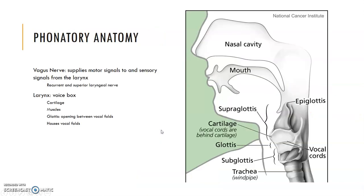There are two things you need to know for phonation anatomy. The vagus nerve supplies the efferent and afferent signals to the larynx. There are multiple branches because it is the wandering nerve, but the recurrent laryngeal nerve and superior laryngeal nerve provide innervation to the larynx for the motor signals that tell the muscles to close for phonation. The recurrent nerve provides most signals; the superior nerve really provides just one muscle. The key point is that the vagus nerve innervates the larynx.